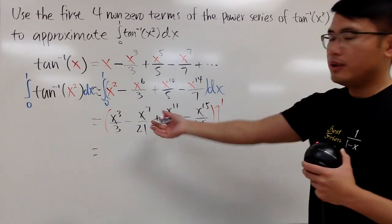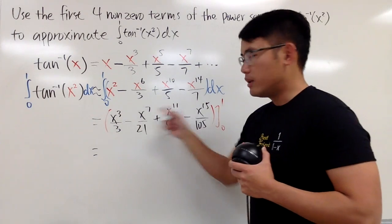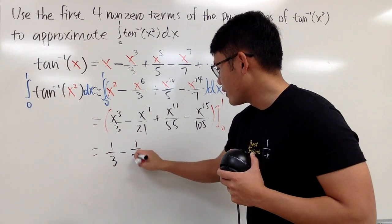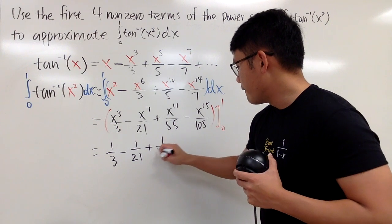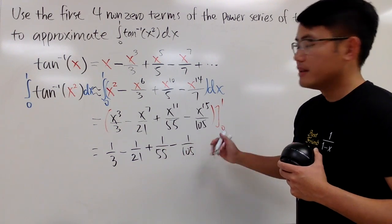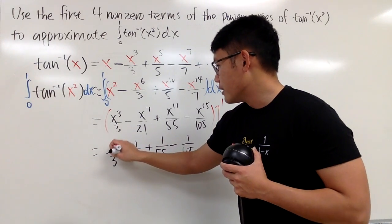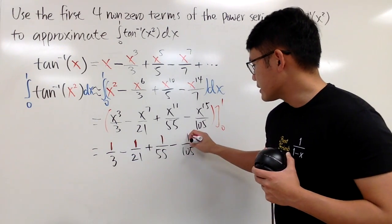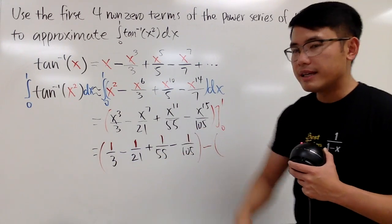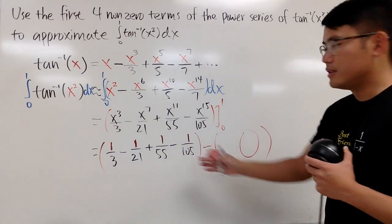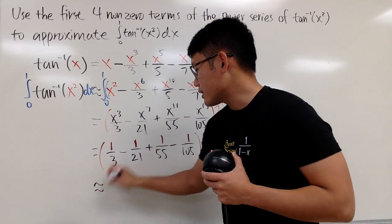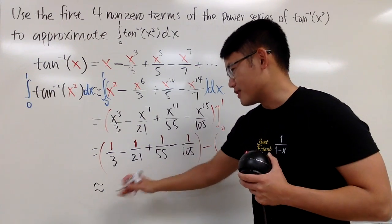Well, put 1 into all the x, you just get 1 on the top, right? So you just get 1/3 minus 1 over 21, plus 1 over 55, and then minus 1 over 105. This is what happens when you plug in the 1 into all the x, right? So that's the first part, and then you minus, when you put 0 into all the x, you just get 0 of all terms, so it's just like a big 0 right here. So you just pretty much do this, and then you will get approximately again, because once again, I'm using from here to here as approximated.